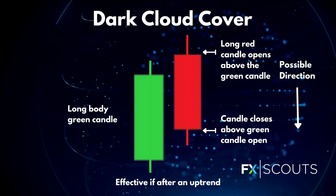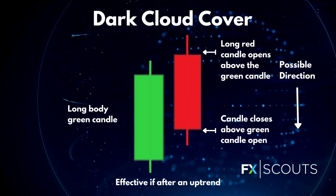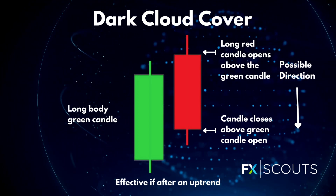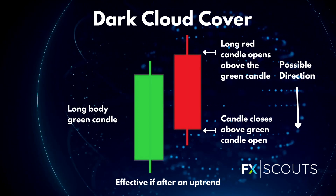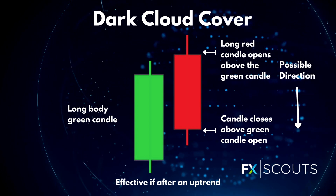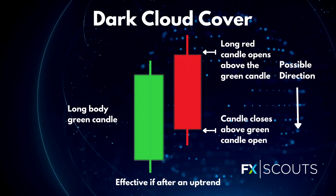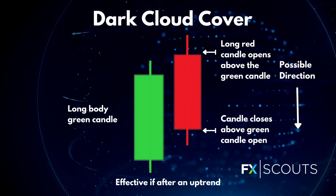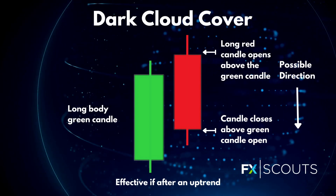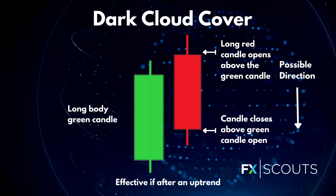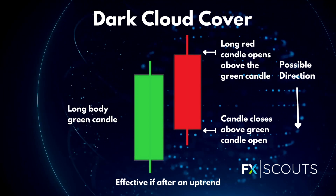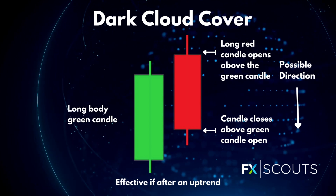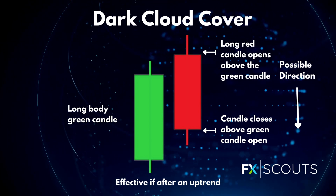Lastly you get dark cloud cover — this candlestick pattern indicates a bearish reversal, basically a black cloud over the previous day's optimism. It comprises two candlesticks: a red candlestick which opens above the previous green body and closes below its midpoint. It signals that the bears have overtaken the session pushing the price sharply lower, and if the wicks of the candles are short then it suggests that the downtrend was extremely decisive.